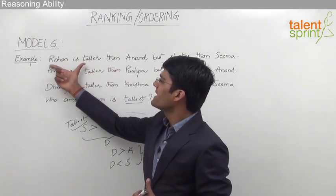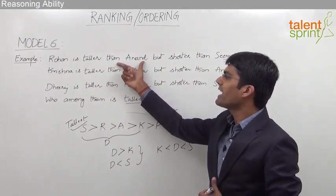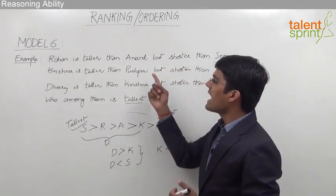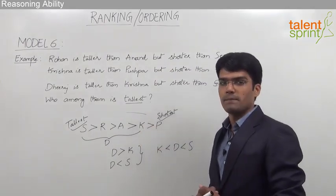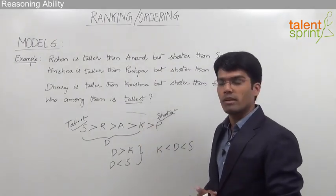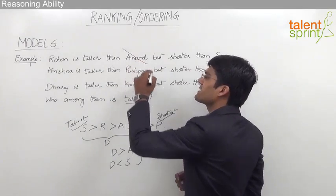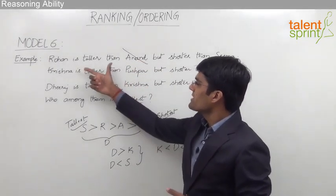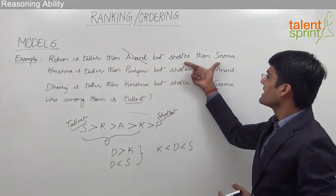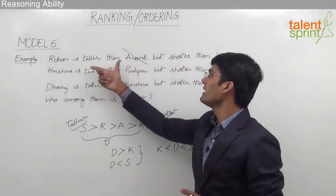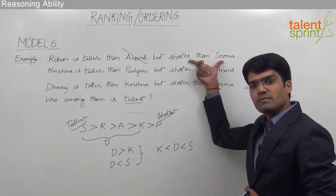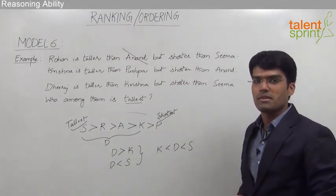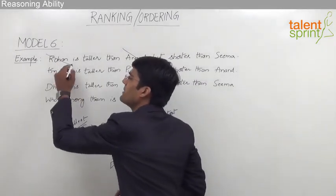Looking at the first statement: Rohan is taller than Anand. When Rohan is taller than Anand, Anand is obviously shorter than Rohan, so Anand cannot be the tallest person. Continuing: Rohan is shorter than Sima, so Rohan cannot be the tallest person either. Both Anand and Rohan are eliminated.